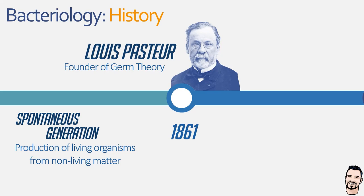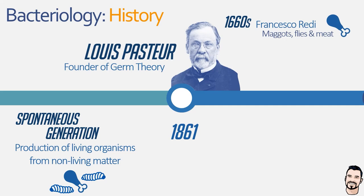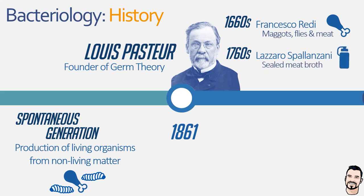Spontaneous generation was the widely held belief that living organisms could spontaneously generate from non-living matter — for example, it was believed rotting meat could spontaneously produce maggots. Pasteur was not content with this theory, informed by two earlier scientists: Francesco Redi, who in the 1660s showed that sealed jars containing meat would decompose but remain maggot-free, and Lazaro Spallanzani, who in the 1760s showed that boiled meat broth in sealed flasks showed no signs of microbial life until the flask was opened, indicating microorganisms came from outside sources.